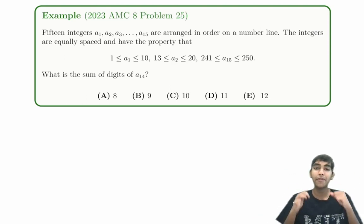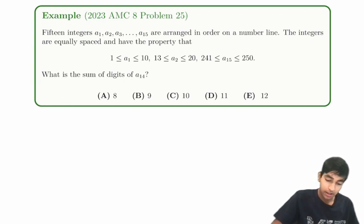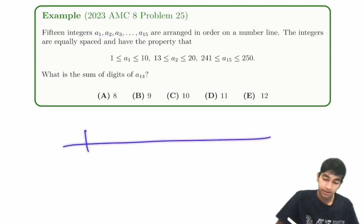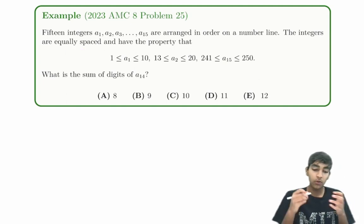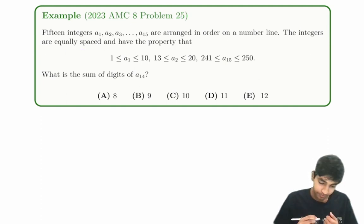This is the last problem of the 2023 AMC8. Let's explore how to solve this tricky problem. We have 15 integers a1 through a15 arranged in order on a number line.